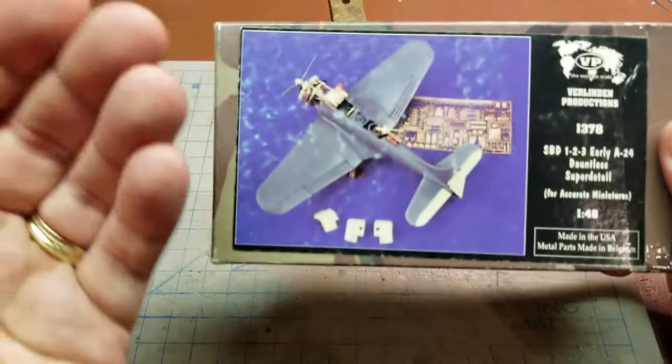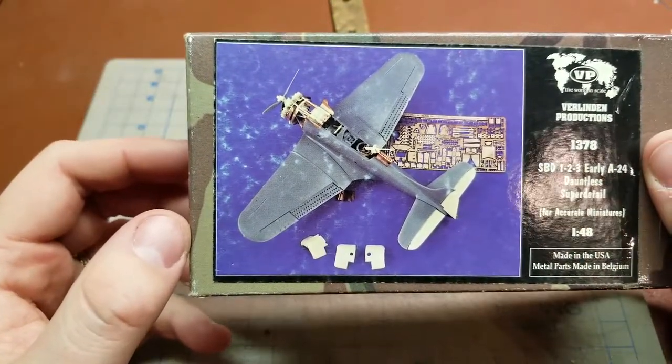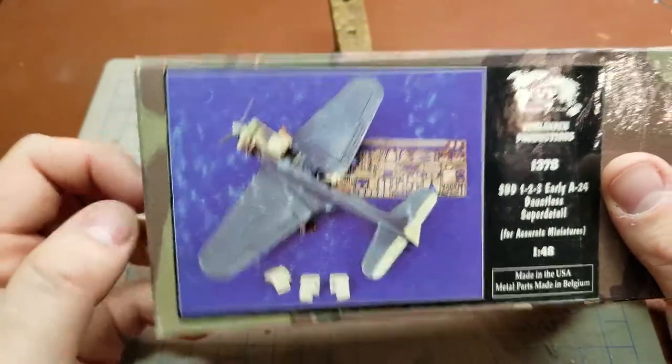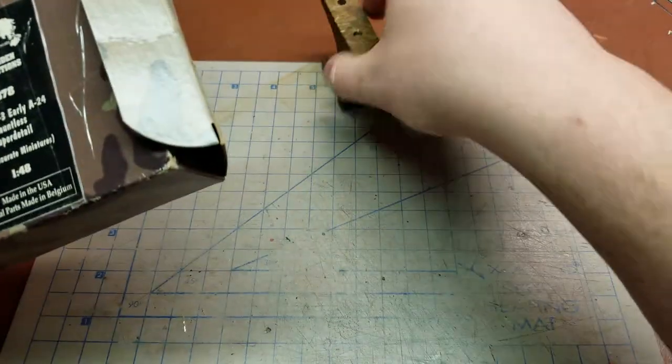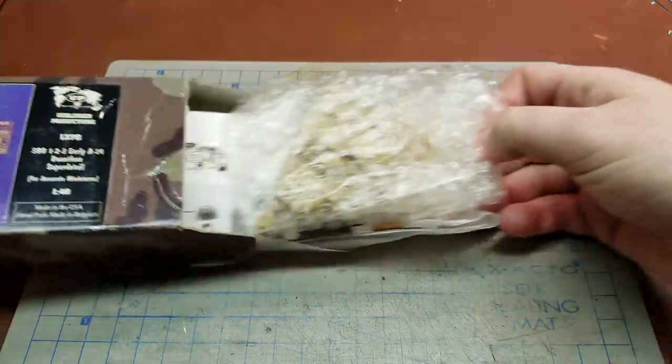Taking a look here at the box art, you can see we have a photo etch sprue as well as the engine, props, and control surfaces. So let's get in here and we'll see what comes in the kit.